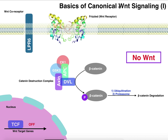Wnt is a chemical signal that's going to cause a variety of changes in cells when Wnt binds to its corresponding receptor. Here we're going to discuss the biosignaling pathway — the canonical Wnt signaling. There's also a non-canonical Wnt signaling pathway that we'll discuss in a separate video. The effects of Wnt are very broad and diverse and depend on the organism and cell type, so we're just going to go over the signaling pathway.